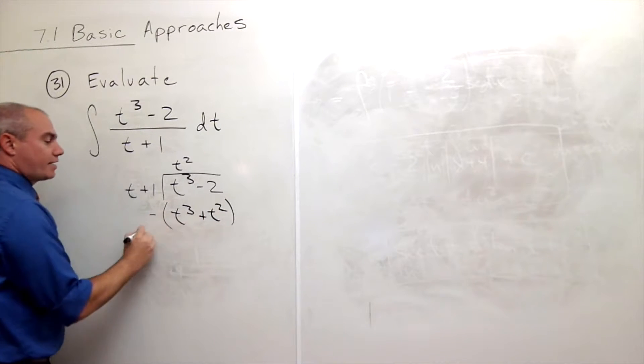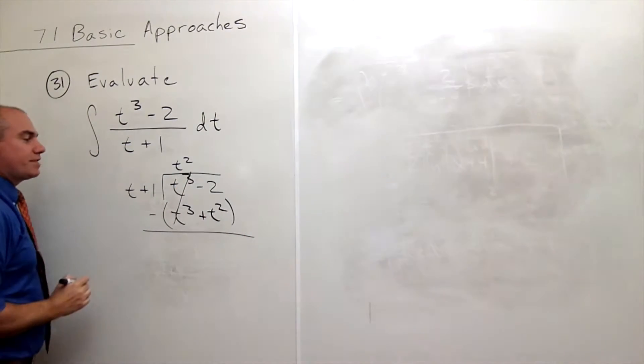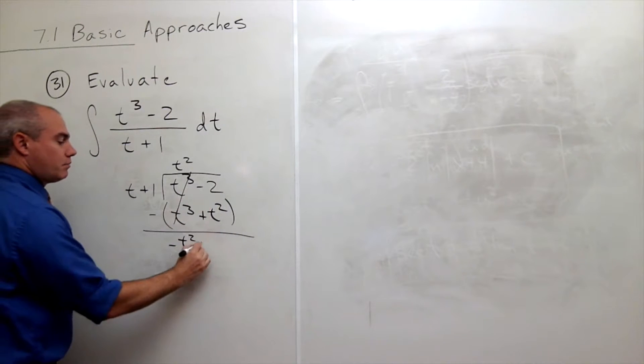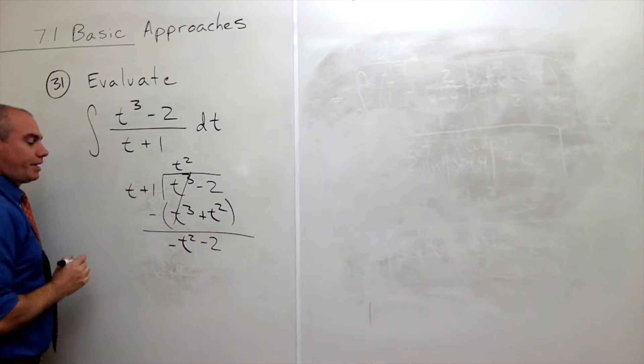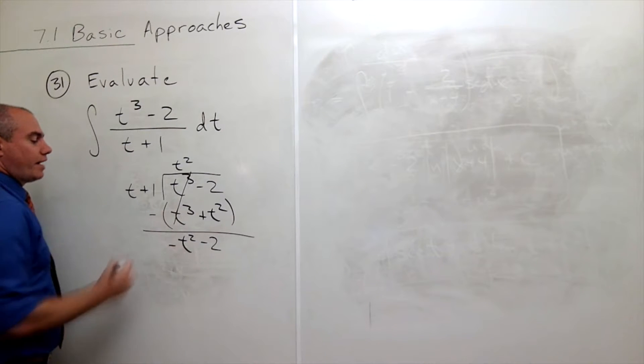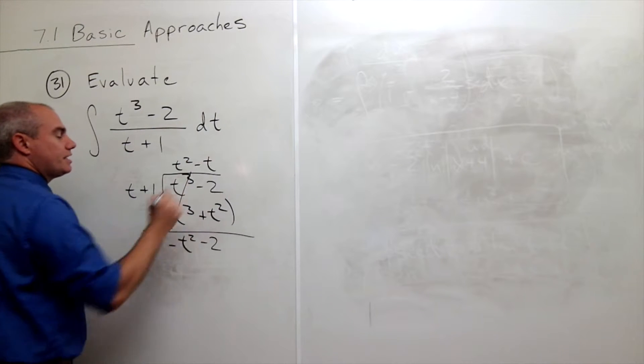I want to subtract that. The t cubes cancel and I get minus t squared minus 2. I bring down the minus 2. How many times does t go into negative t squared? Well, minus t times.